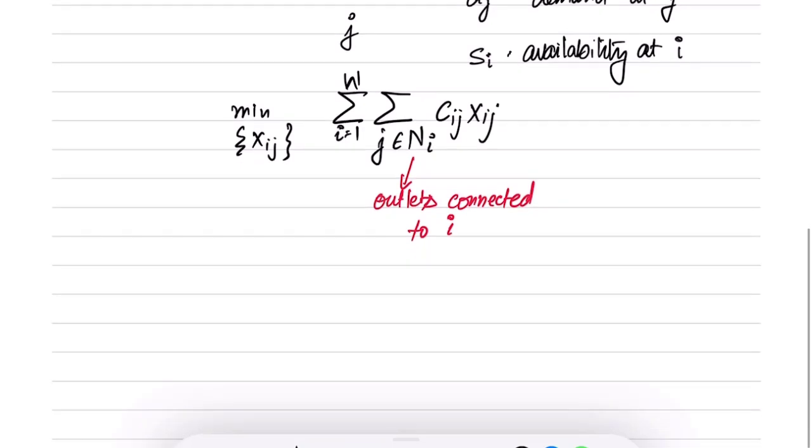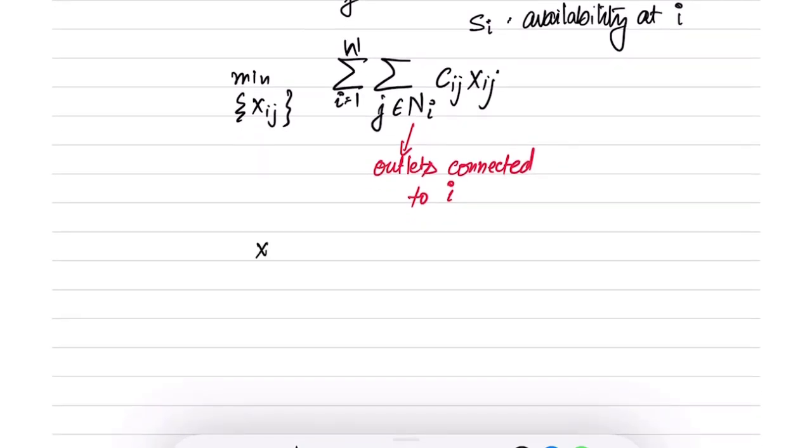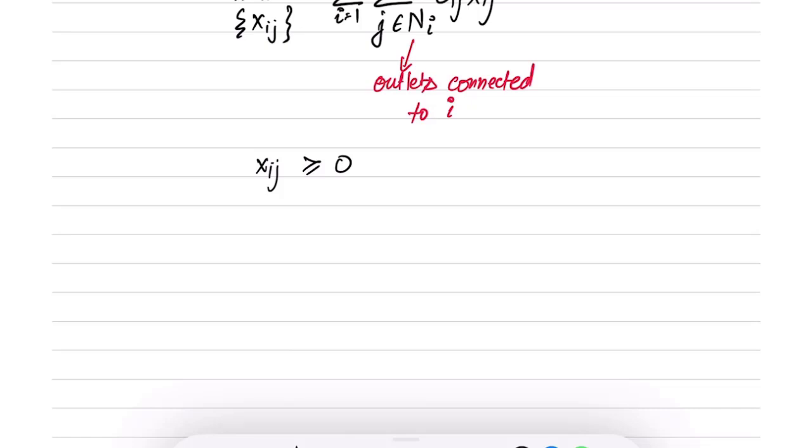What are the constraints on Xij? First of all, Xij is a quantity that is shipped, so it has to be non-negative. It cannot be negative which would not make sense practically. Further we have to supply as much quantity as there is demand. So summation over k in nj, the set of warehouses that are neighbors of outlet j, Xkj should be greater than or equal to dj.